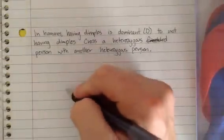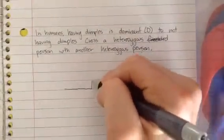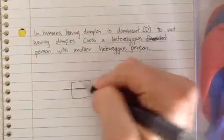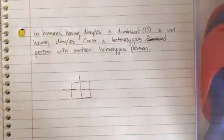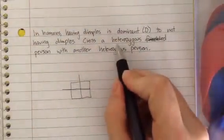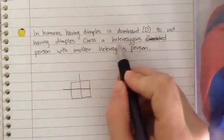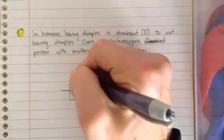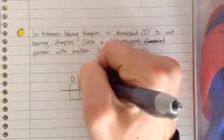Doing really good here. So again, we start off with our cross, our Punnett square, looks something like this. We want to figure out what is parent one. Well, parent one is heterozygous. Hetero means different, big D, little d. So they have dimples, but they're hetero.